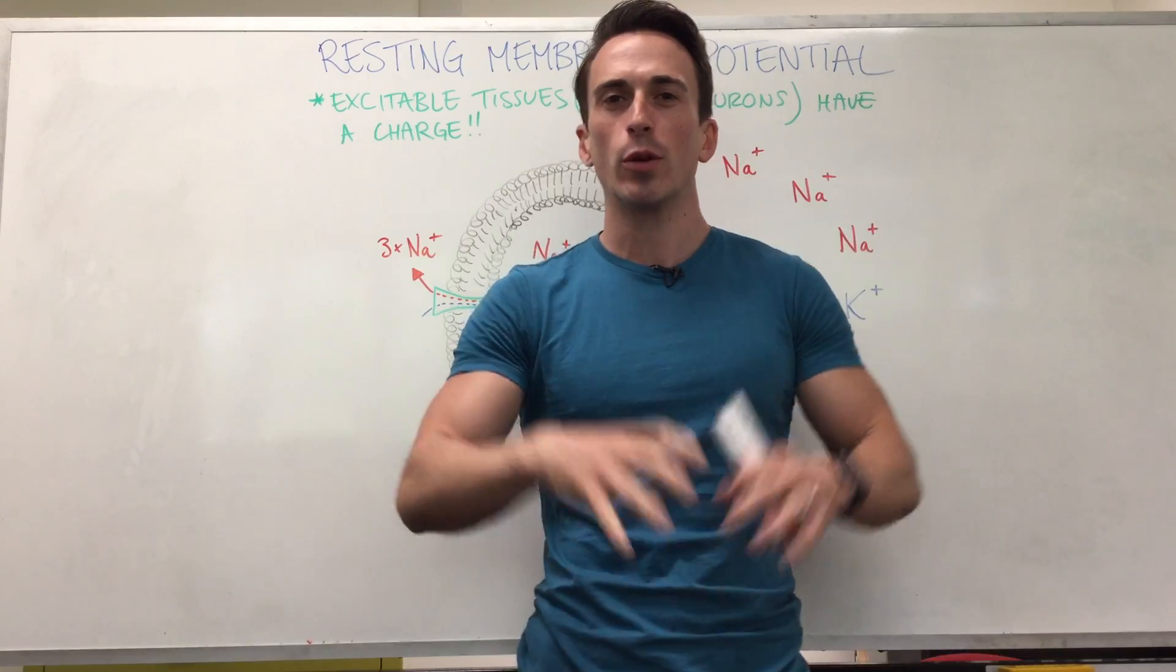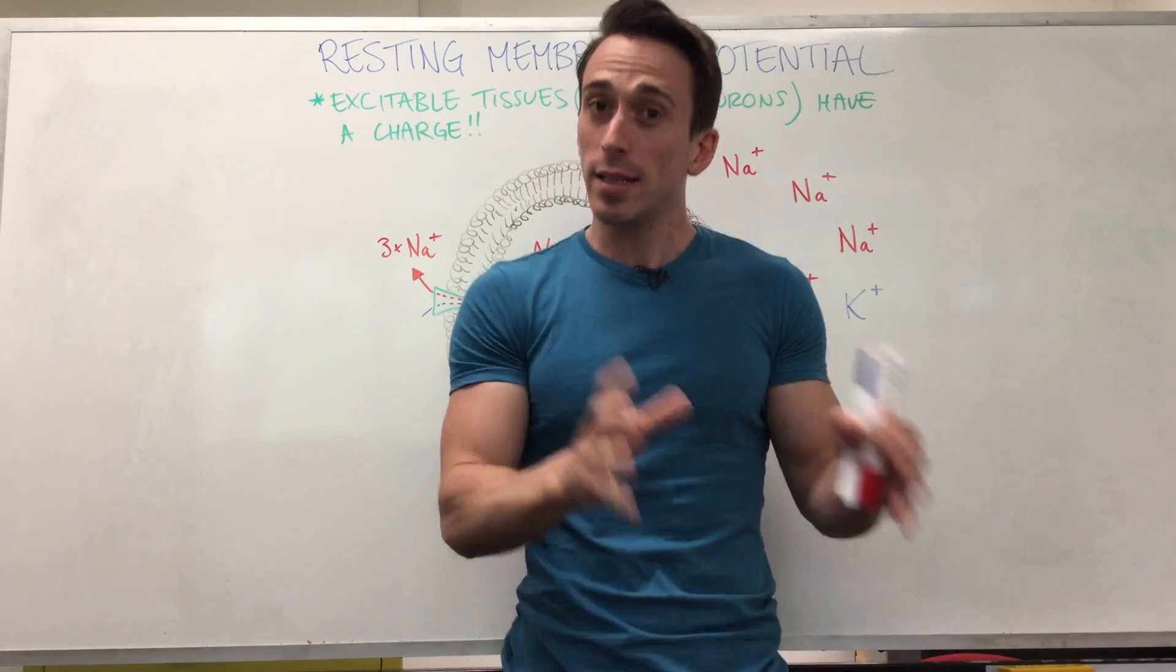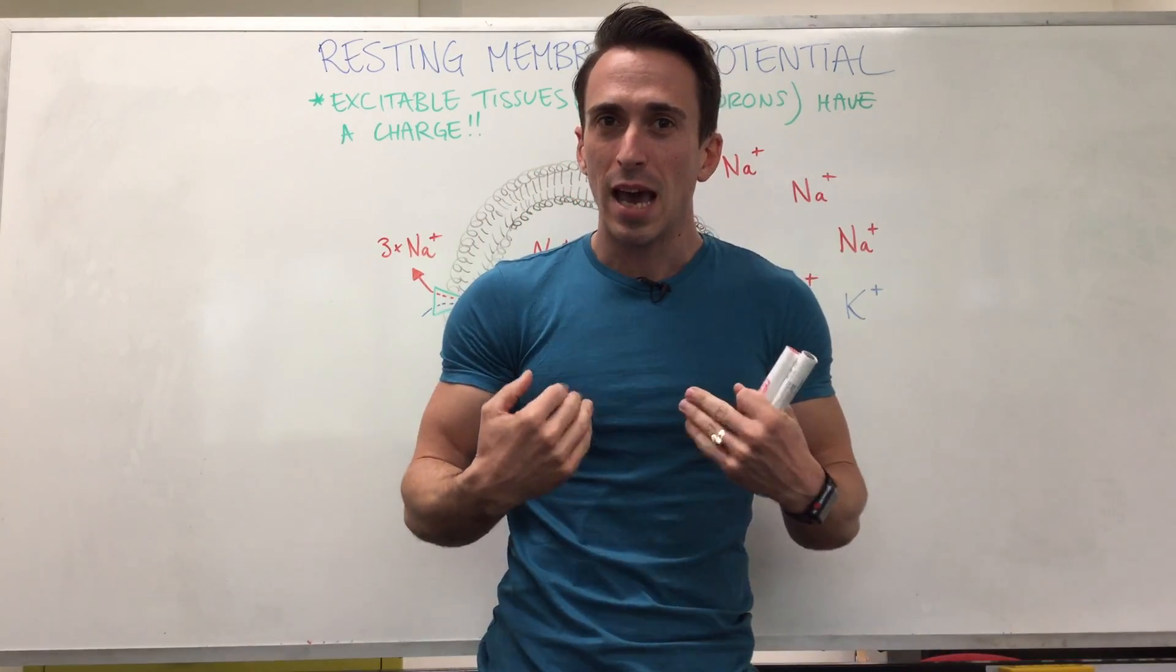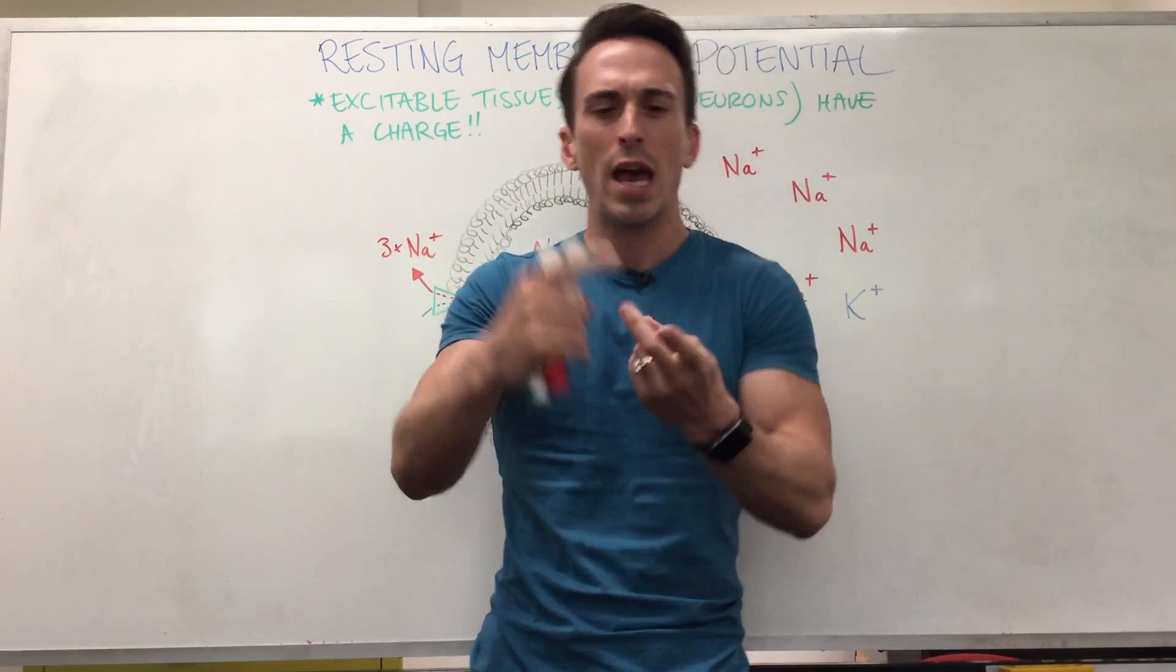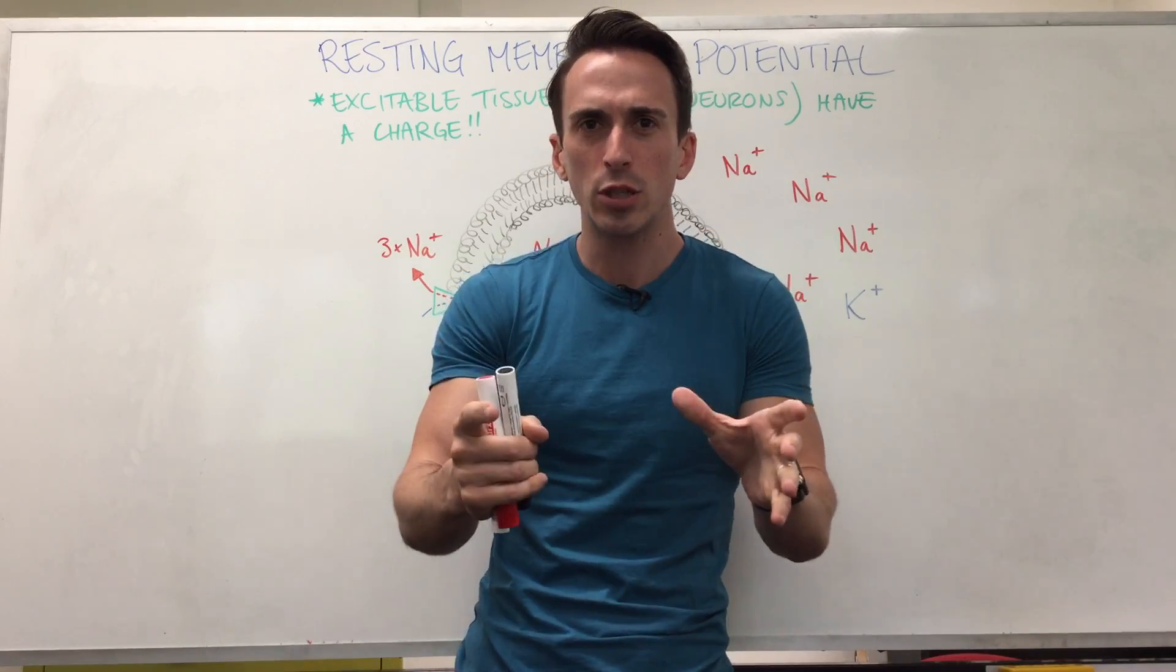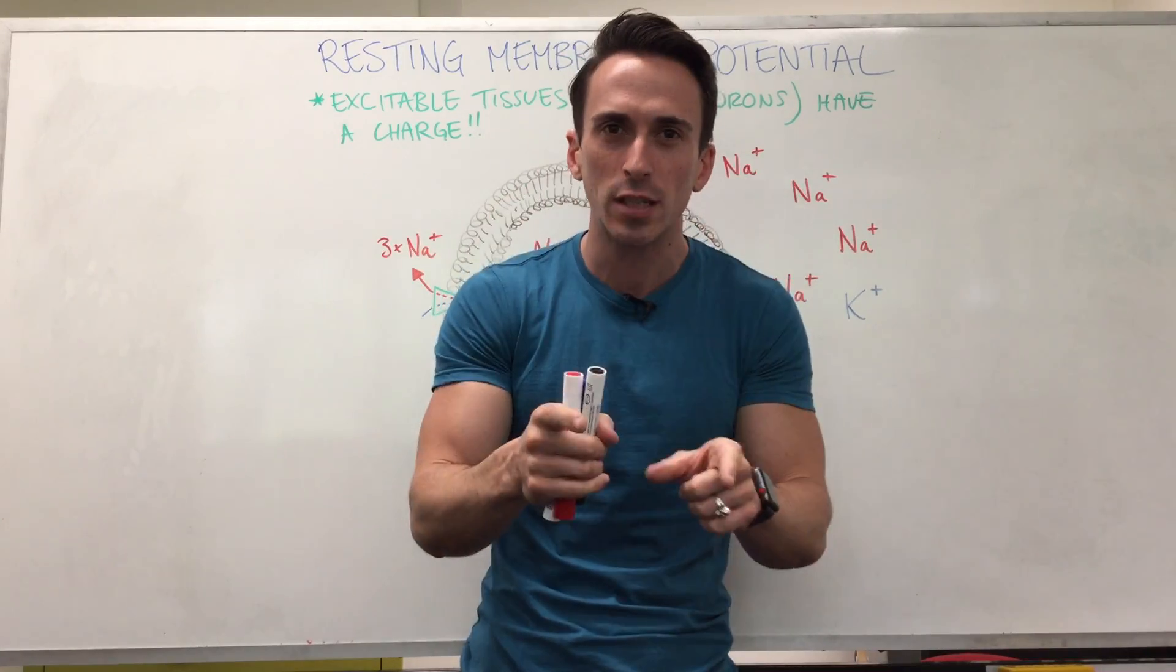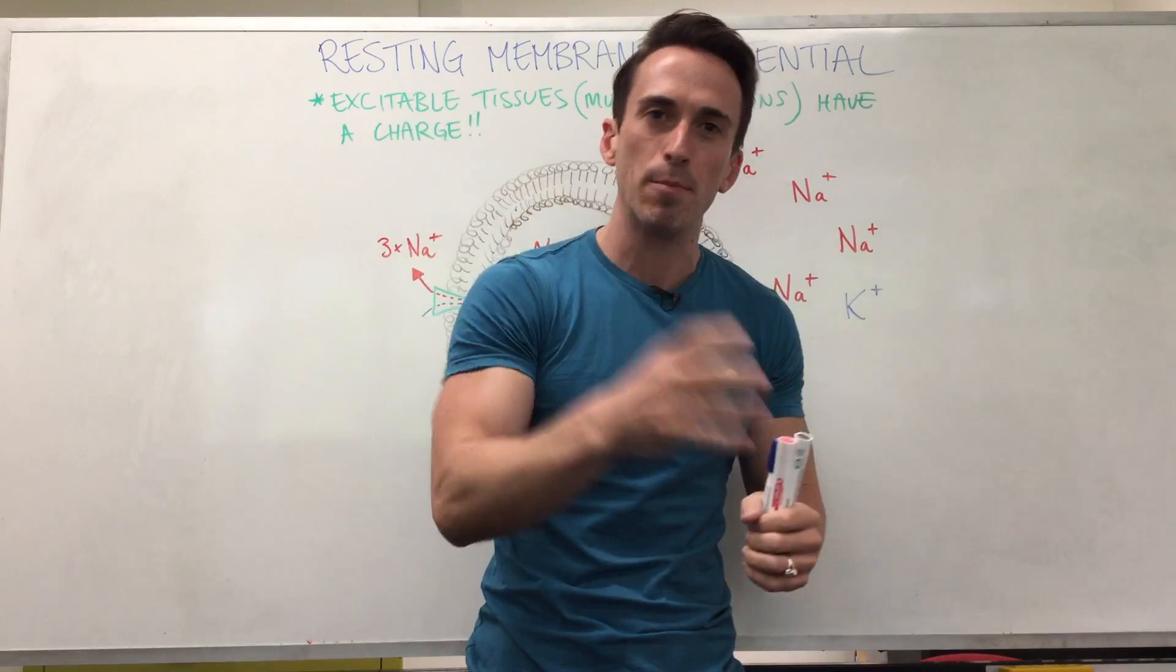Well there's some tissues in our body that we call excitable tissues. Now these excitable tissues, just like me, have all this built-up energy they need to do something with it. These tissues include muscle tissue and nervous tissue. What do muscle tissues do? They contract. What do nervous tissues do? They send these electrical impulses.